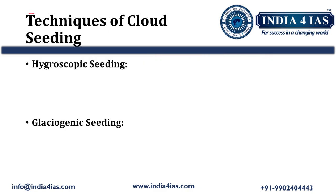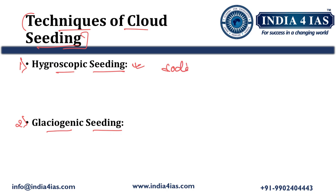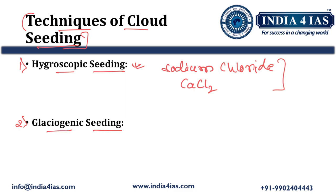Coming to the techniques of cloud seeding, there are two major techniques. The first is the hygroscopic seeding technique. In this technique, sodium chloride (NaCl) and calcium chloride (CaCl2) salts are dispersed into clouds. These salts attract water vapor, leading to the formation of larger water droplets that can fall as rain.